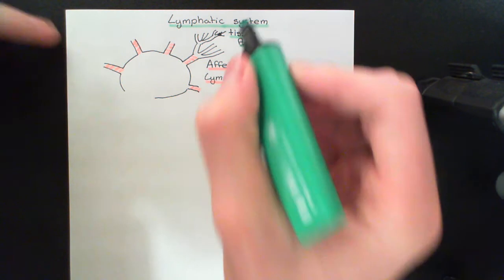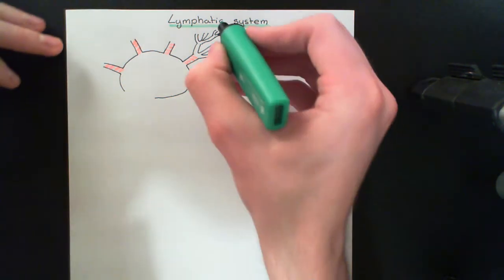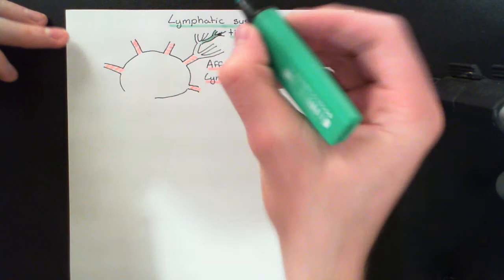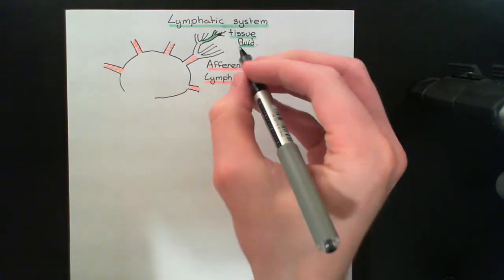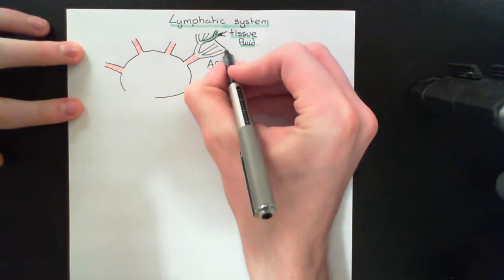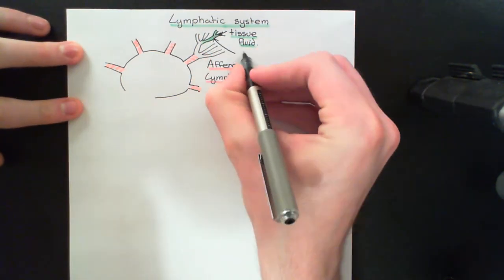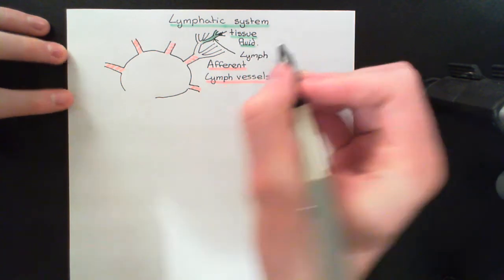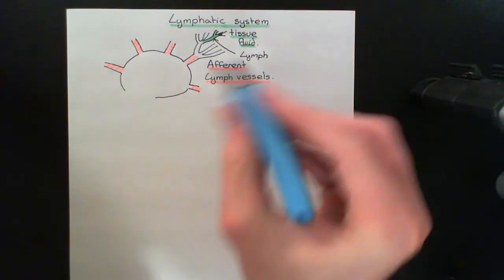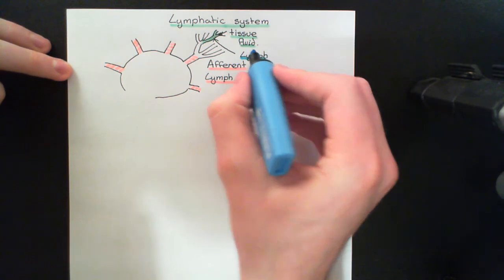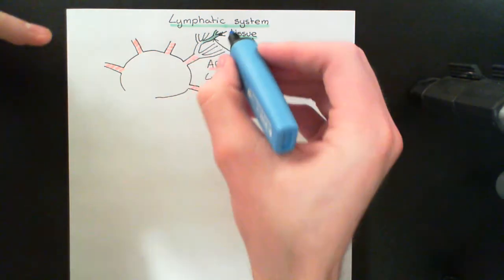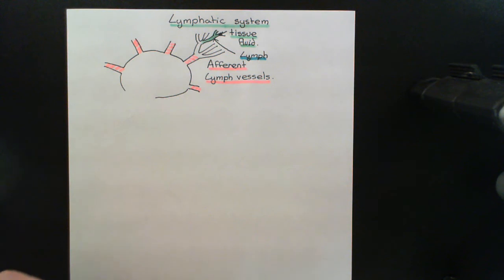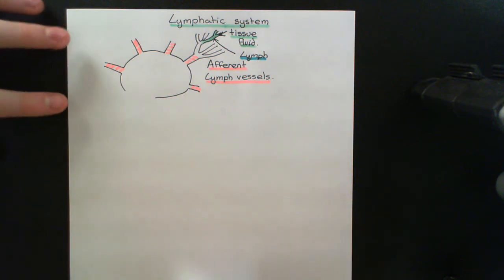You don't just have one lymph node. The fluid inside lymphatic vessels is called lymph — so once the tissue fluid goes into the lymphatic system, it's then called lymph. The fluid that's draining from these tissues into the lymph node via the afferent lymph vessels is now going to have to filter through the lymph node.